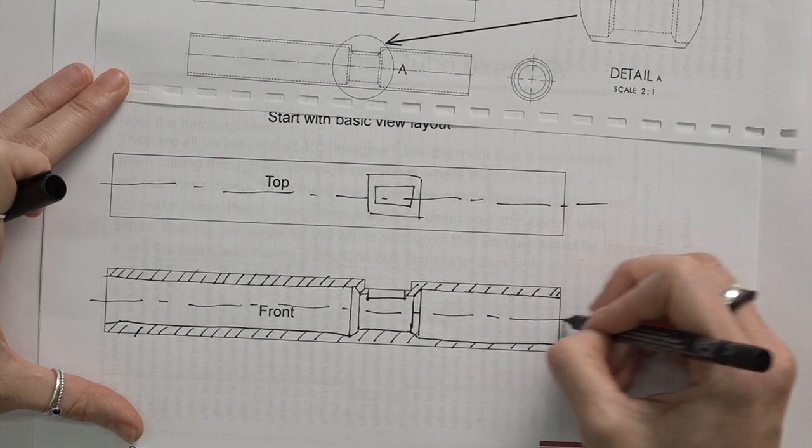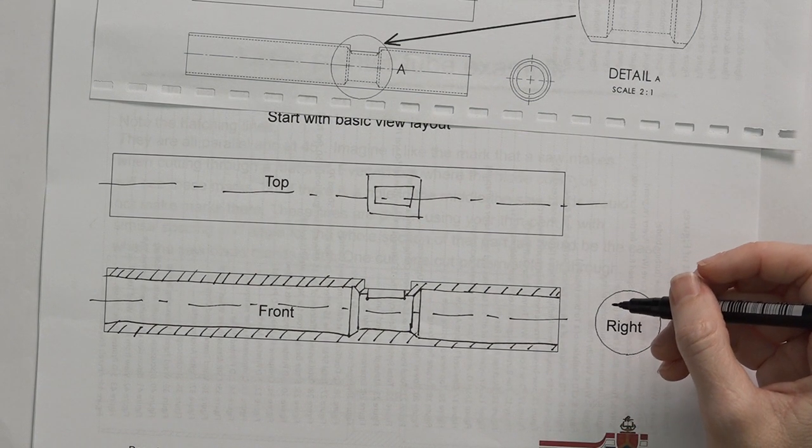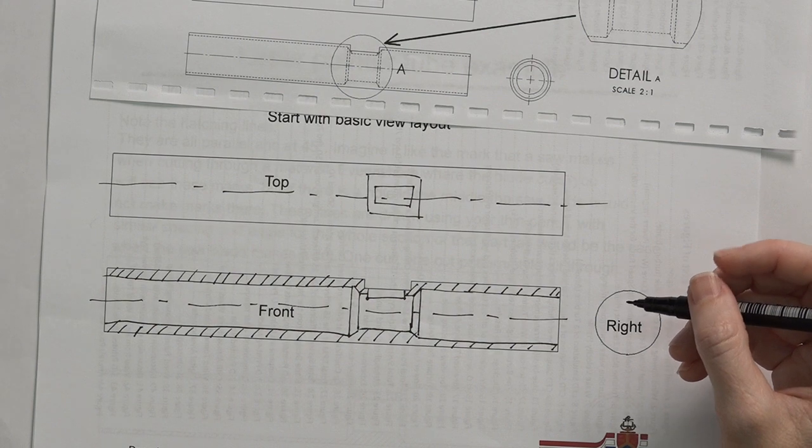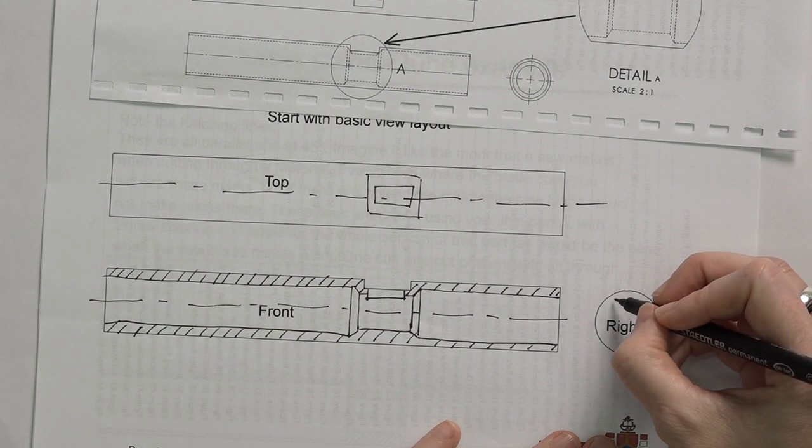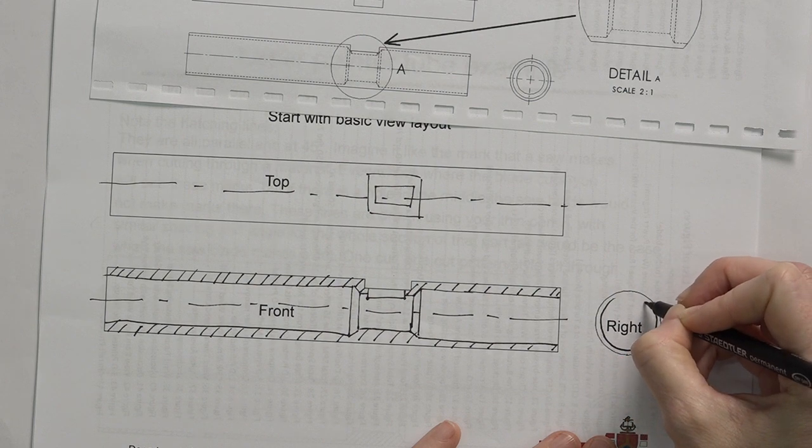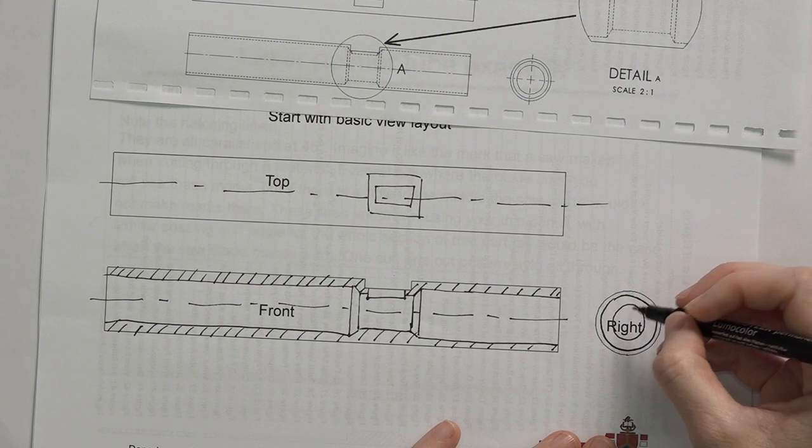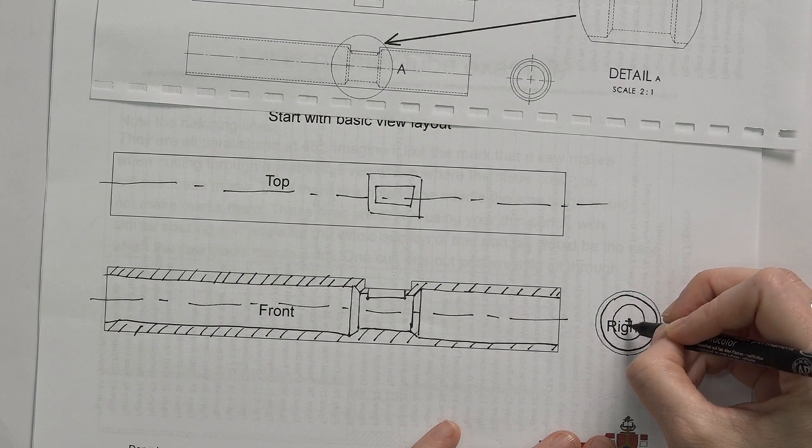Now remember the point of a section view is to reduce hidden detail or take it away altogether. So when you have a section view, it's highly unlikely that you need any hidden detail. To err on the side of caution, it would be better if you have a section view to completely forget about the hidden detail if you're unsure where you would need hidden detail to be added.